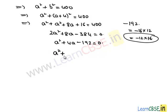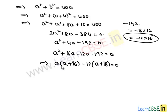So we have A² + 16A - 12A - 192. By taking A common we get A(A + 16), and by taking negative 12 common we get -12(A + 16). From these two terms we take A + 16 common, and we remain with A - 12.